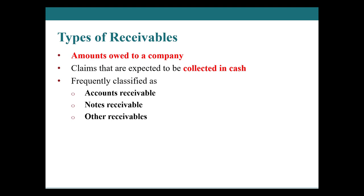Notes receivable tend to be for longer periods of time than accounts receivable. Accounts receivable is like a timing issue — like a friend that never has cash but always wants food or beverages; they settle up typically within 30 to 90 days. A note receivable, however, typically goes beyond 90 days. They are more of a formal credit instrument, meaning there tends to be a formal contract with terms, typically including interest. These notes receivable are typically for one year or less, but may be long-term if they extend beyond one year. Both accounts receivable and notes receivable are referred to as trade receivables.